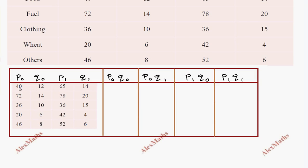First, calculate P₀Q₁. So 40 into 14 equals 560. 72 into 20 equals 1440. 36 into 15 equals 540. 20 into 4 equals 80. 46 into 6 equals 276.